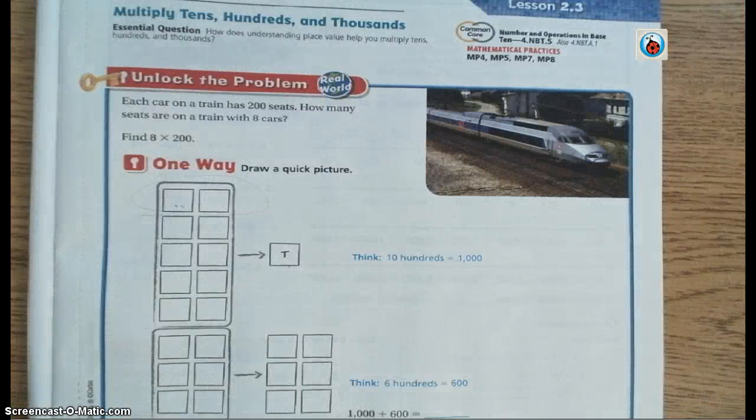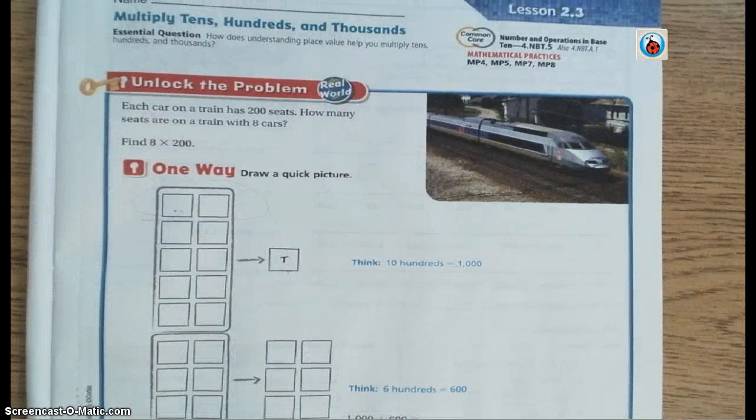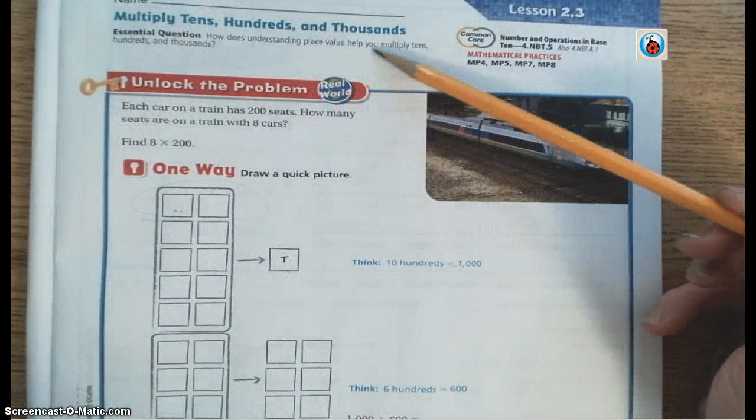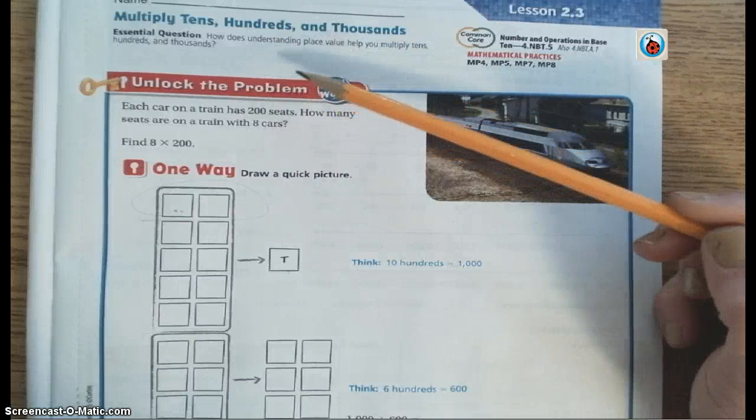Okay, welcome to lesson 2.3 on chapter 2, lesson 3. Your essential question here is, how does understanding place value help you multiply tens, hundreds, and thousands?